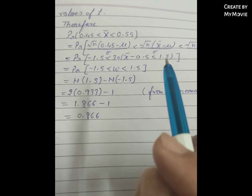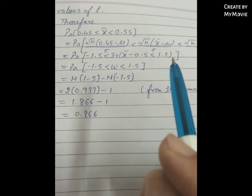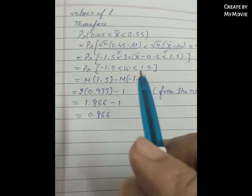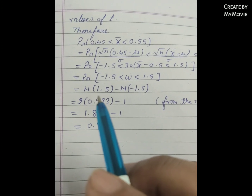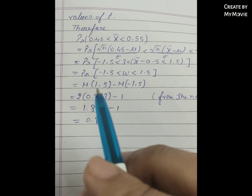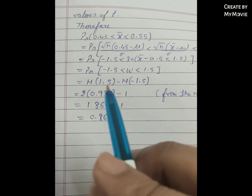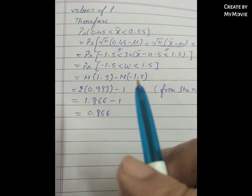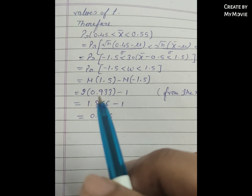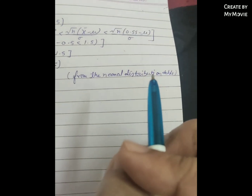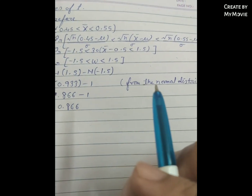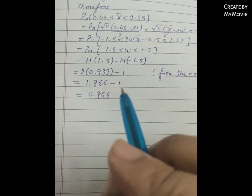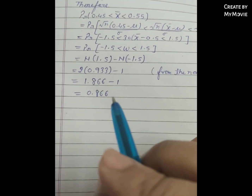So probability that negative 1.5 is less than W is less than 1.5. Using the normal distribution table, this equals N(1.5) minus N(negative 1.5), which equals 2 times 0.933 minus 1, equal to 1.866 minus 1, equal to 0.866.